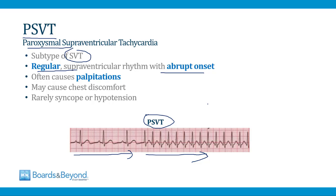Sinus tachycardia is not a PSVT because it does not start from one beat to the next — it has a slow onset, gradually rising as you exercise. Atrial fibrillation is also not a PSVT because it is irregular. PSVTs are the special subtype of SVTs with a regular rhythm and abrupt onset. When they occur, they often cause palpitations — the most common symptom — and rarely chest pain, or even more rarely, fainting or hypotension.